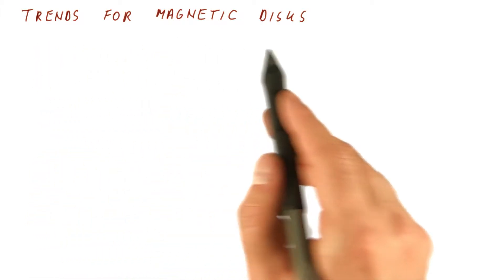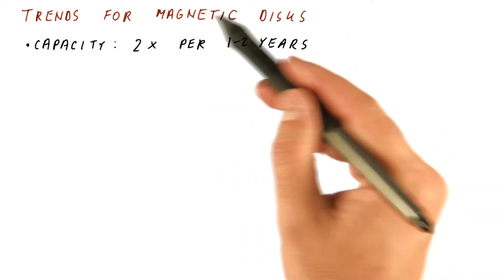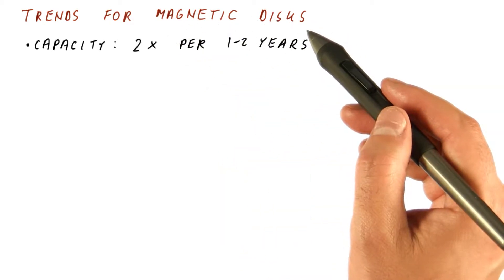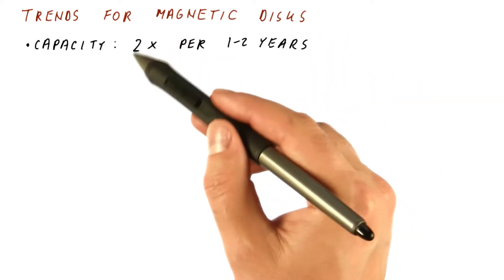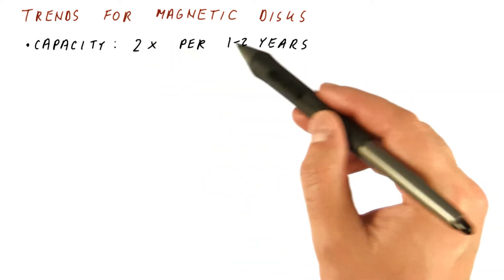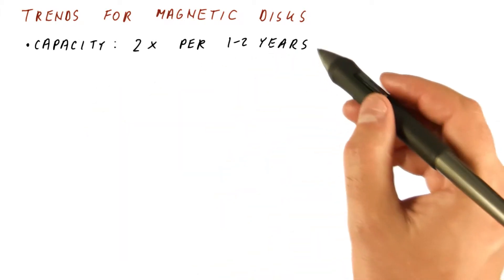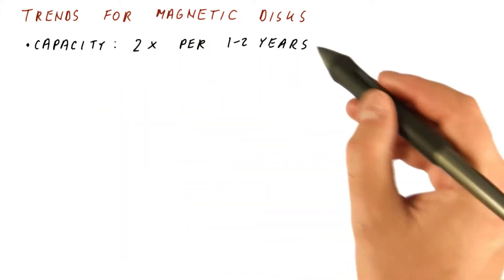So let's look at some of the trends for magnetic disks over the years. The capacity of magnetic disks, how much data fits on a single disk, has actually been improving exponentially at a rate of about two times per one or two years for a while. So things are getting better. We get more and more data per magnetic disk.